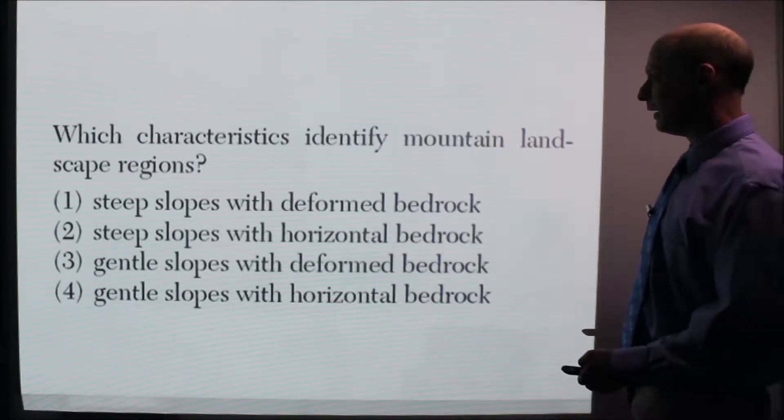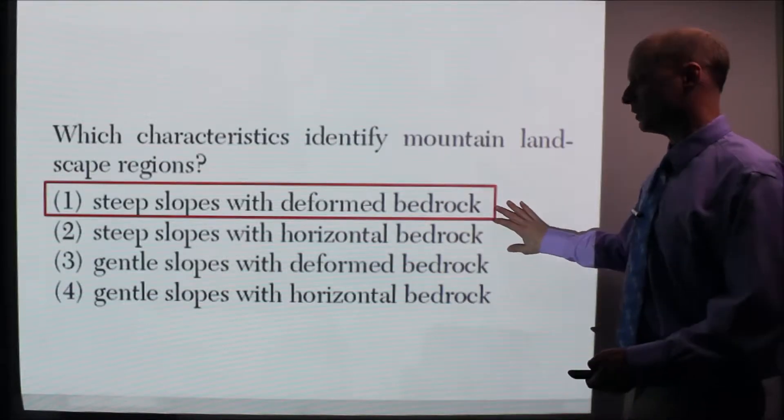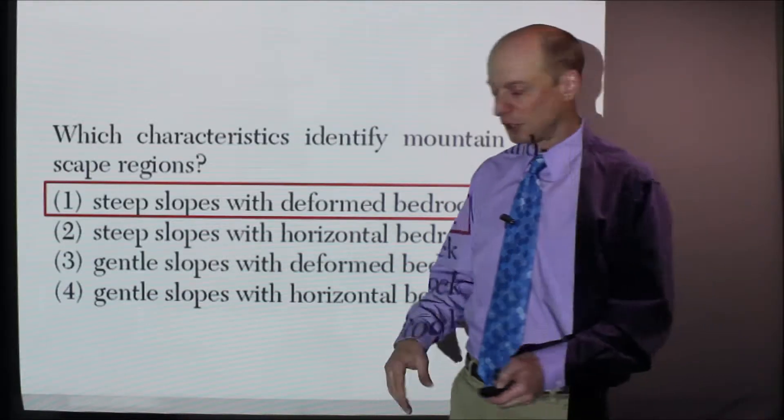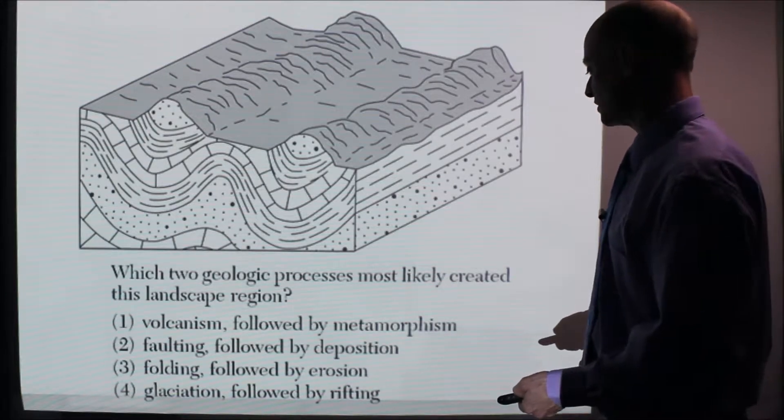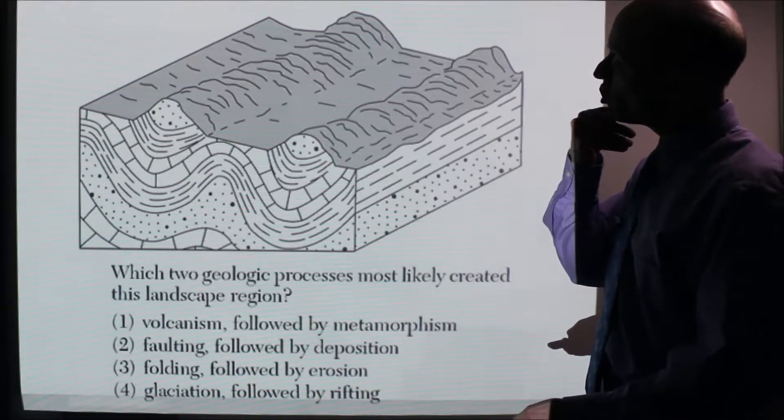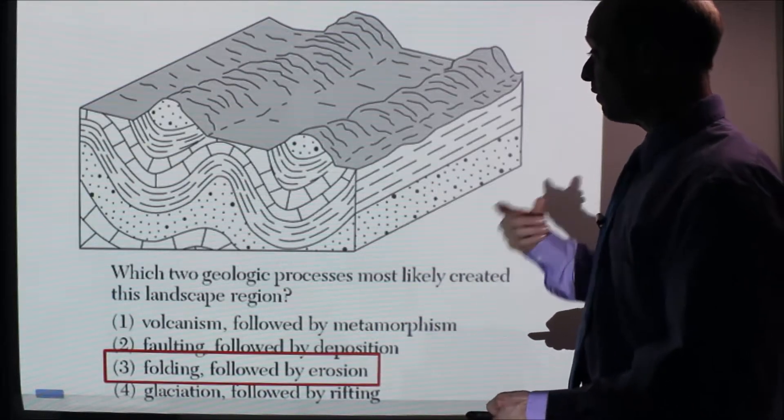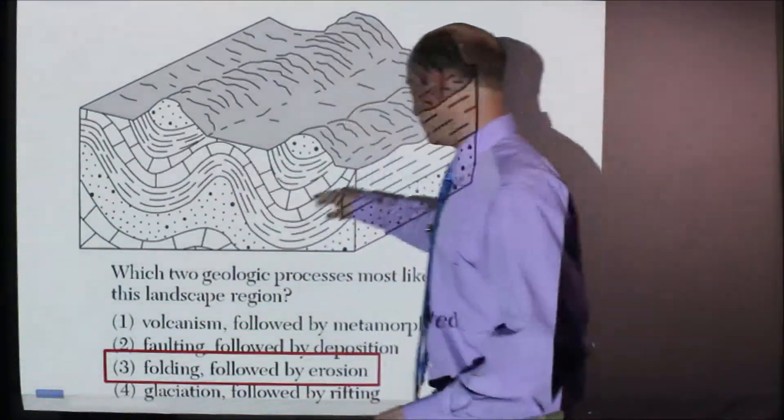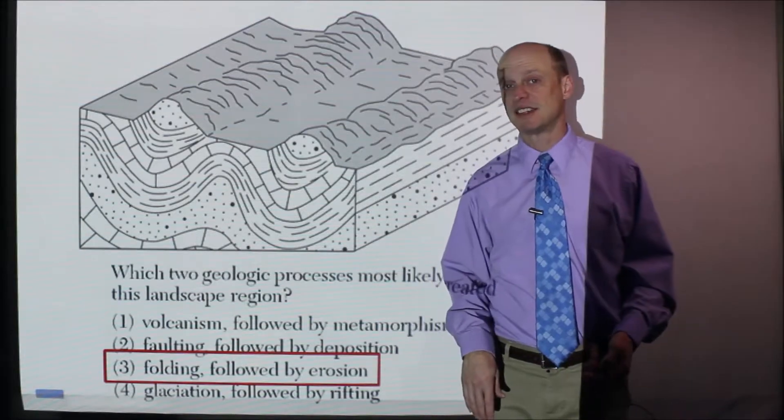Which characteristics identify mountain landscape regions? Answer: steep slopes with deformed bedrock. So it's all the stuff that we just mentioned. Here's another one. Which two geologic processes most likely created this landscape region? So you look at it and go, hmm, okay, well, what would be the answer? It would be this. Folding, you see the rock layers are folded here, followed by erosion. That's key.